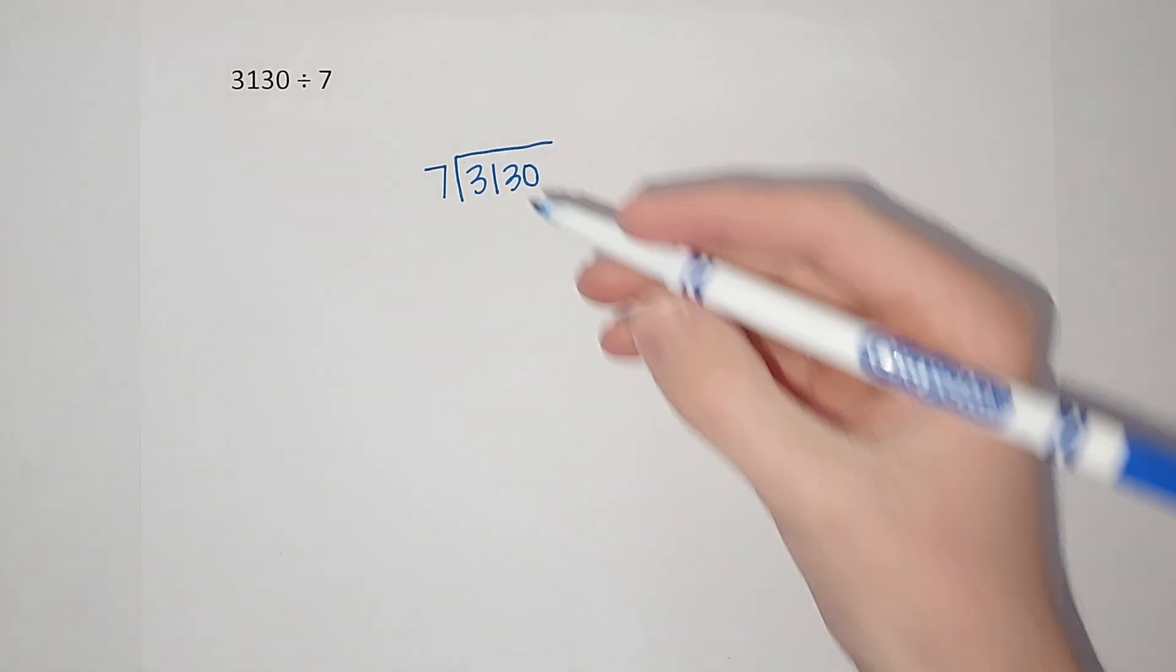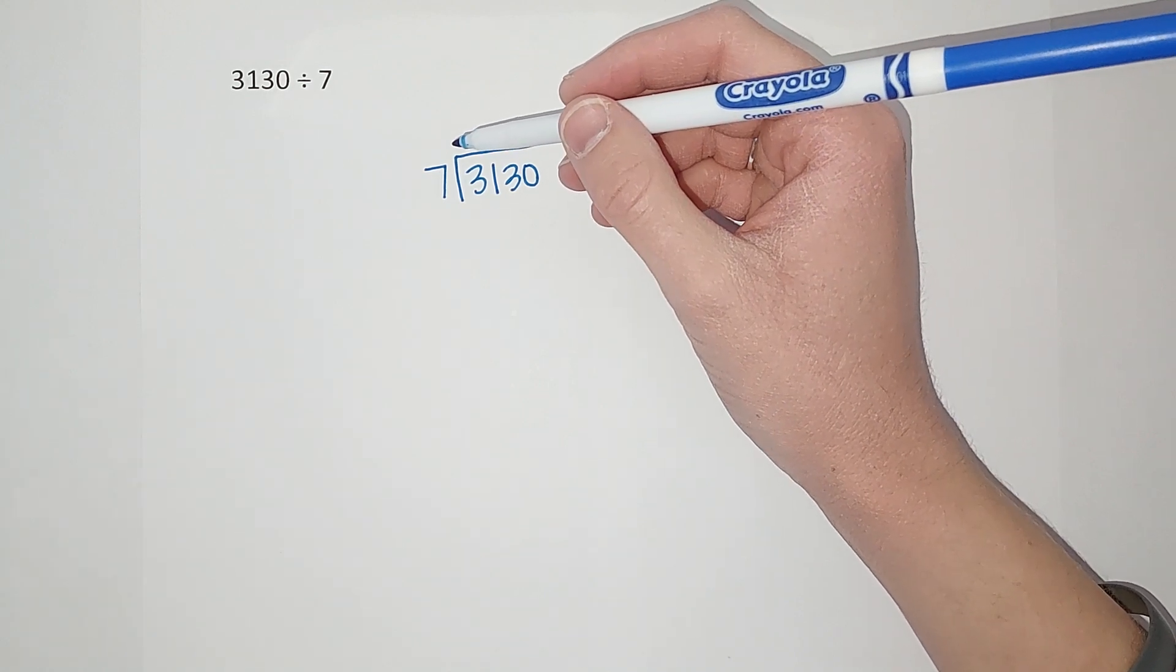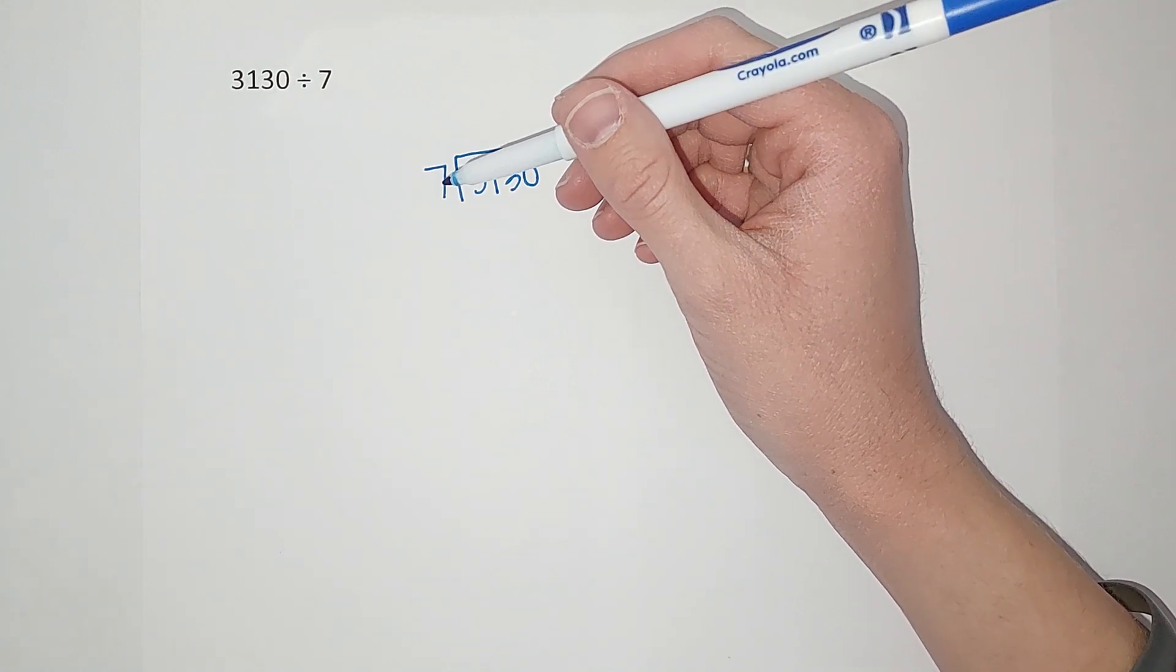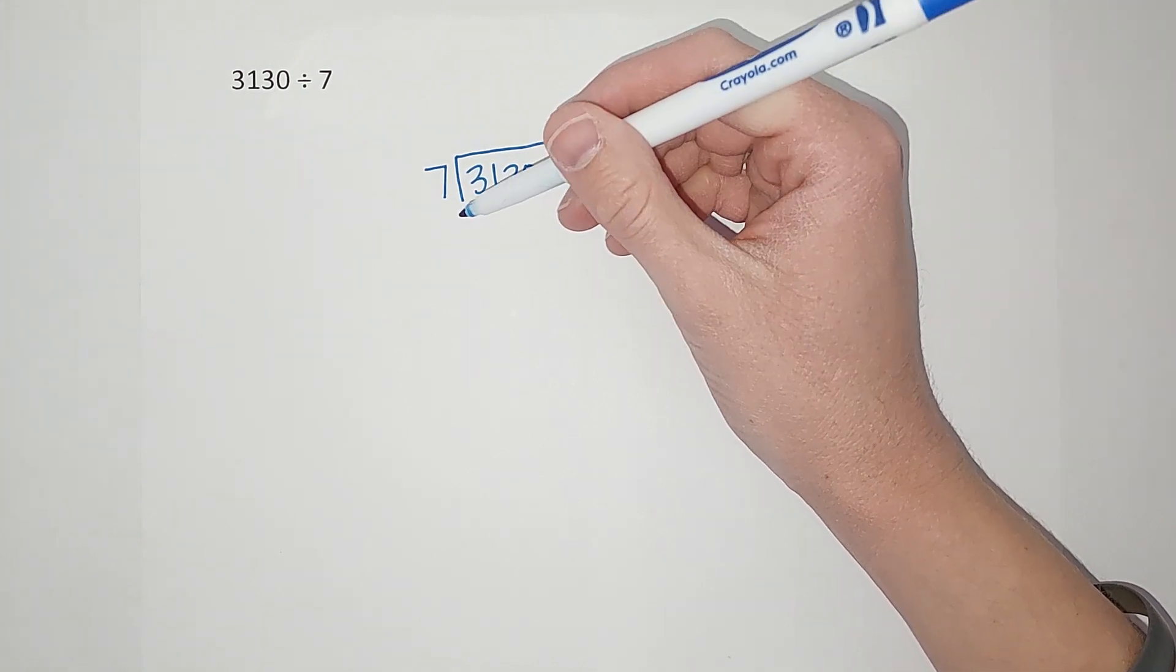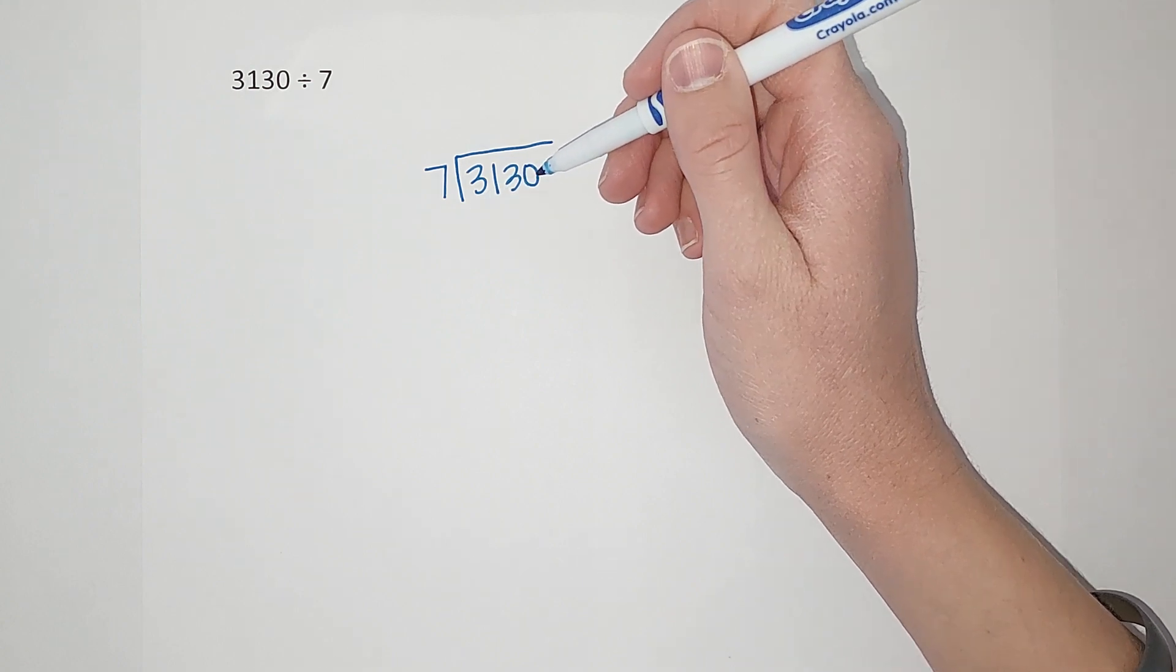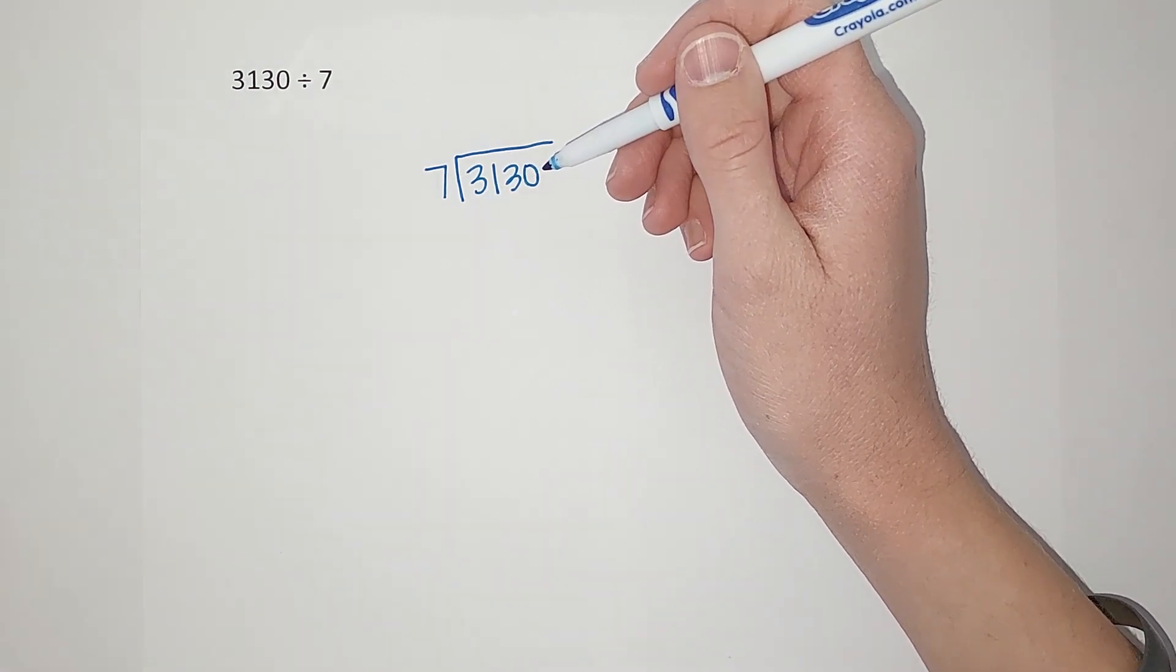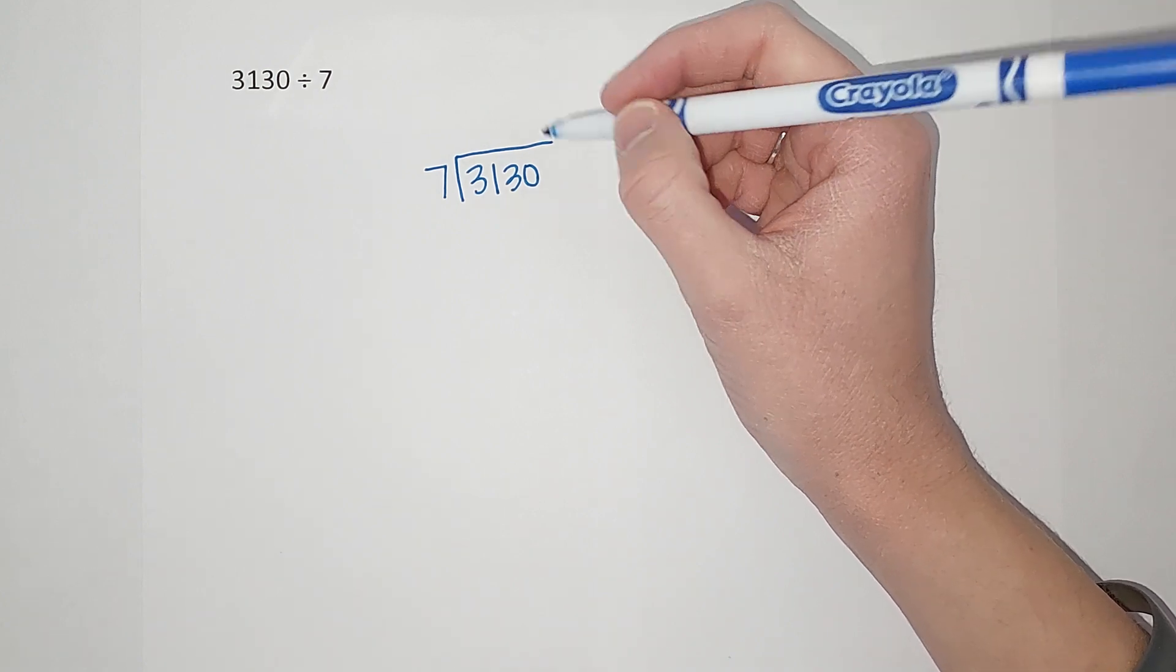Okay, so what are we gonna do with partial quotients division? We're kind of thinking in general terms at first. So I'm thinking, okay, how many times can seven go into three thousand one hundred and thirty, at least? And if you're like, what does that even mean? Just watch.